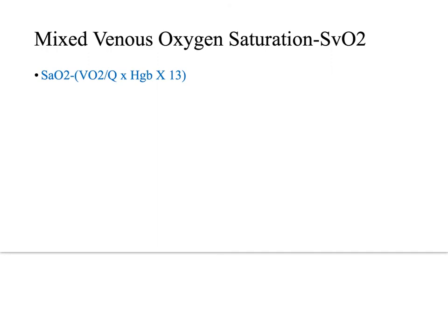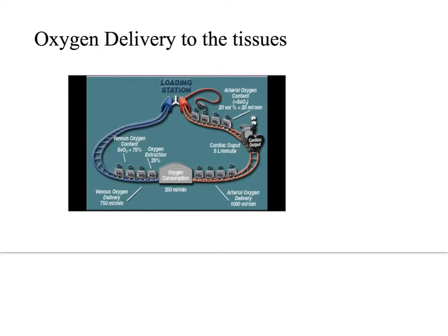Putting all of these concepts together, we can calculate the mixed venous oxygen saturation with the equation shown here. Think of it like a train station: hemoglobin acts as the train cars and oxygen acts as the passenger. When hemoglobin is carried through the blood, oxygen gets unloaded and delivered to the tissues. By the time the oxygen and hemoglobin have traveled through the arterial system, about 25% of oxygen is left on hemoglobin, leaving a difference of 75% — this number is our mixed venous sat.